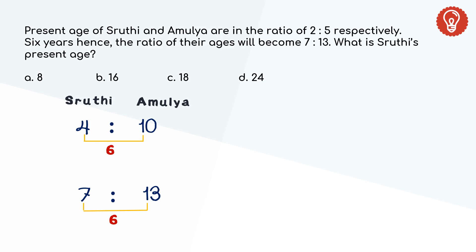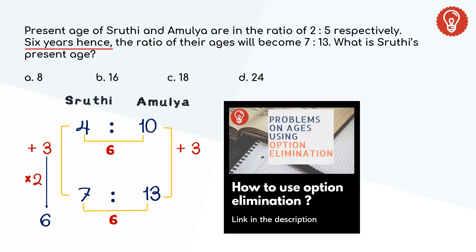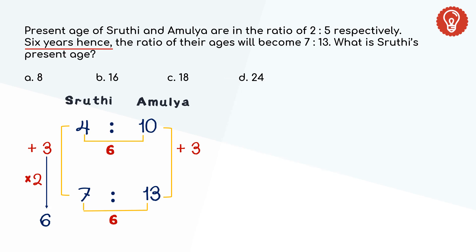Assuming the ratio itself as the original value: if Shruti is 4 years today, after 3 years she turns 7. Similarly, if Amulya is 10 years today, after 3 years she becomes 13. Hence 3 should be added to both sides of the ratio according to our assumption. But the age gap mentioned in the question is 6 years. Increasing our assumption by 2 to match the value — because we assumed Shruti's age as 4 years, we increase by the same number 2: 4 × 2 = 8. Therefore Shruti's present age is 8 years. Option A is the correct answer.